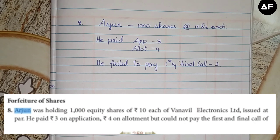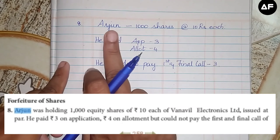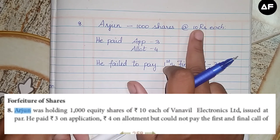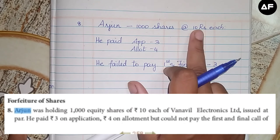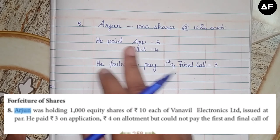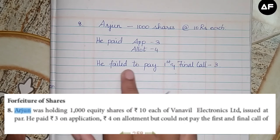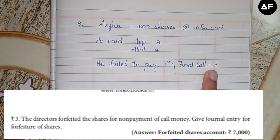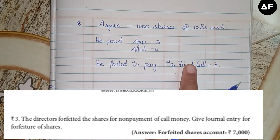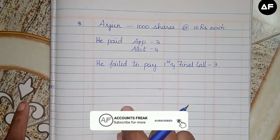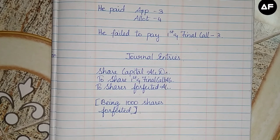For the calculation: Share Capital is the full called-up value; Share Allotment and Share Call show the unpaid amounts; and Shares Forfeited shows how much that shareholder has paid so far. Now let's read through the first sum. Arjun was holding 1,000 shares at ₹10 each. He paid ₹3 on application and ₹4 on allotment, but could not pay the first and final call of ₹3. The directors forfeited his shares for non-payment of call money.